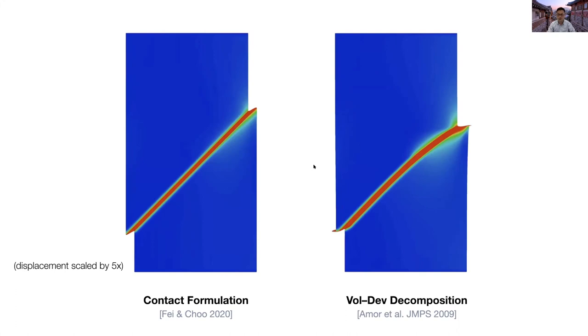You can see that when we use the volumetric deviatoric decomposition method, in which the frictional contact is not physically treated, you will see that there's some unrealistic crack kinking in the phase field simulation results. So this means that proper treatment of frictional contact is very important for modeling frictional crack in phase field method.